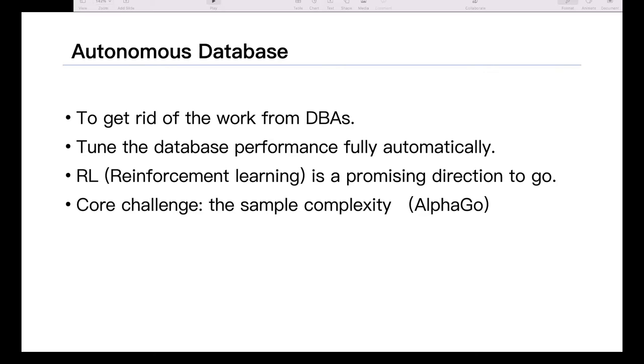There have been several works before proposing using RL to solve the autonomous database mystery. But the core challenge behind this is the sample complexity issue, because it requires too many samples. For AlphaGo, for example, it takes several million years of human time to get a good agent. But for big databases, we must consider that in AlphaGo you can do parallel simulation, but for database, especially big databases, considering web apps and the rising number of users, we must consider the running time or sample complexity.